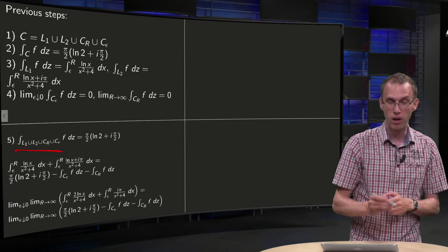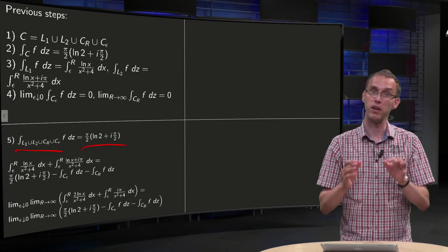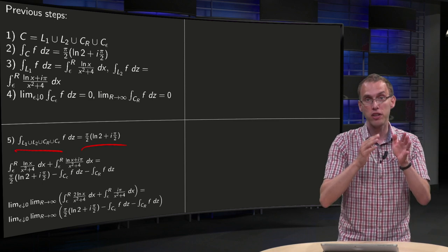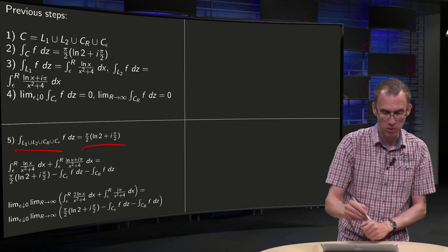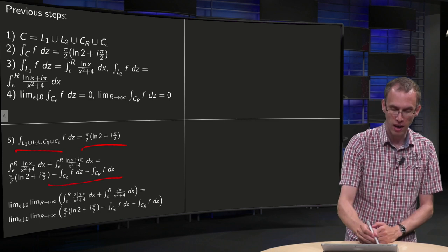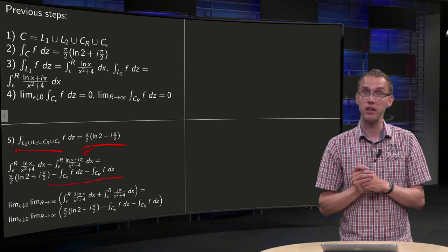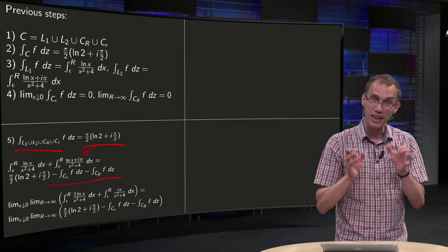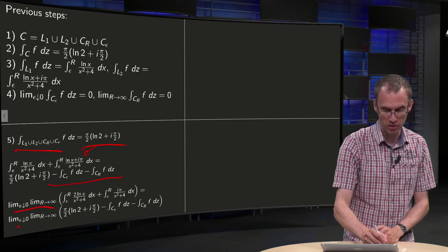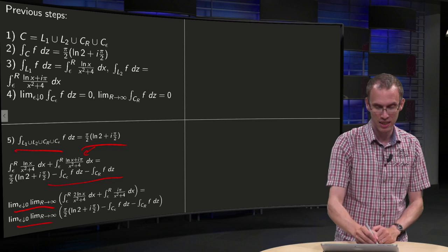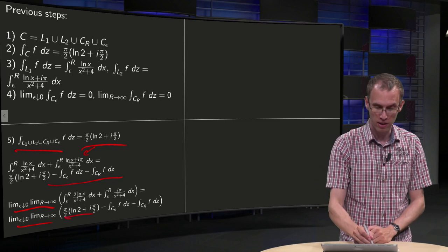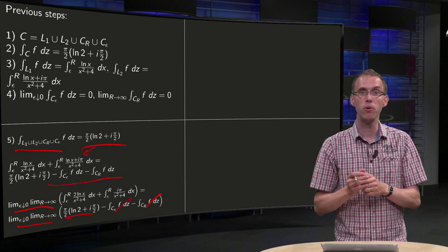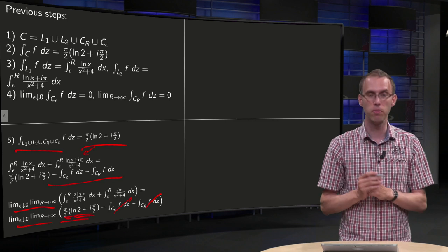So the integral along C equals this number, a combination of what we found in L1 and L2. Then we bring the integrals along CR and C epsilon to the right hand side over here, and here we have the integrals along L1 and L2 as we found in step number 3. And now we can take limits on the left hand side and on the right hand side. On the right hand side here we have a number that doesn't feel the limit, and those are both zero. So all components exist, so we can use the sum rule, so we can conclude that the limit indeed equals this number over here.